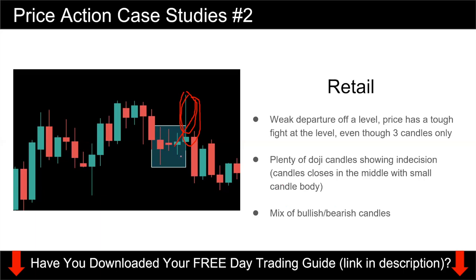You see a doji candle here — a sign of a lot of indecision — which indicates that institutional traders are not pumping a lot of money into this level. They are not buying strongly here. You also see a good mix of bullish and bearish candles in the subsequent price action — a piercing pattern, then a big bearish candle, very mixed. So this is a retail entry, nothing too explosive. You want to avoid trading in this kind of scenario because there is not much institutional money backing it up.